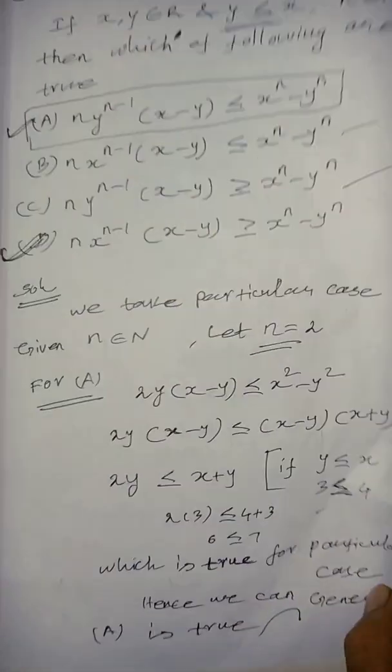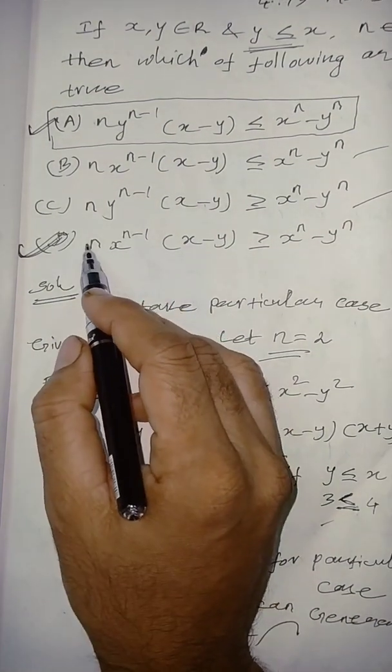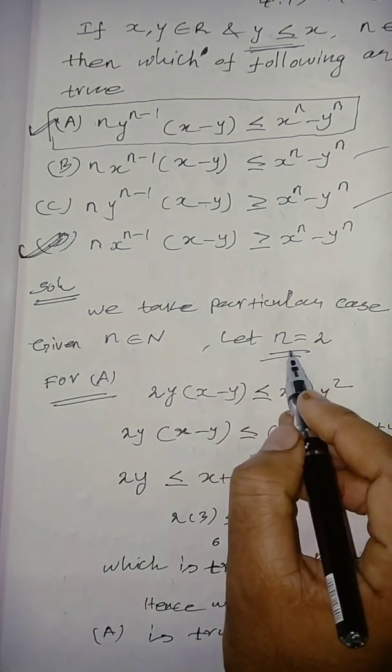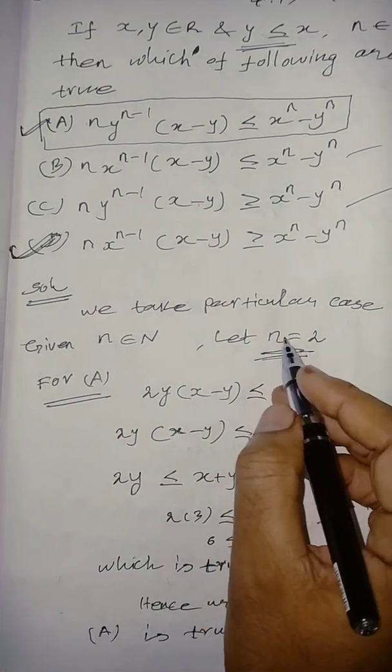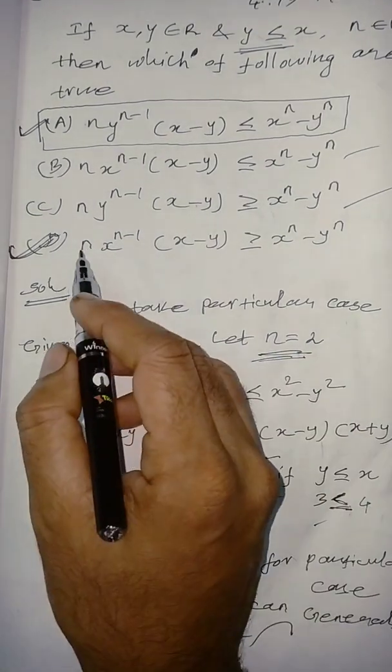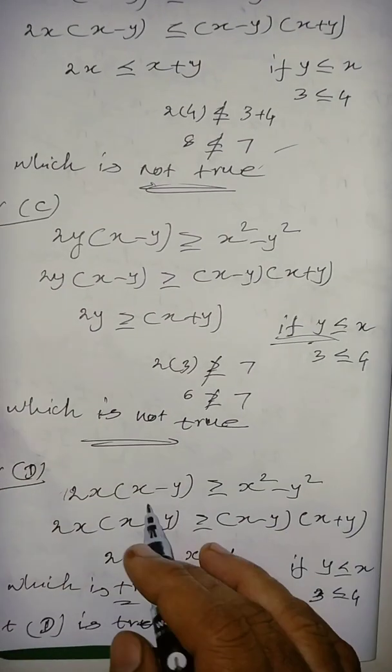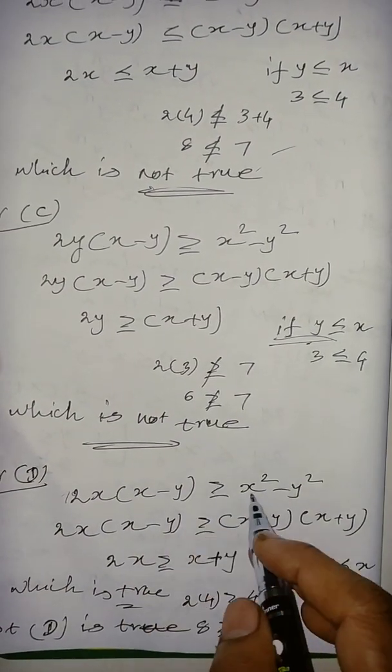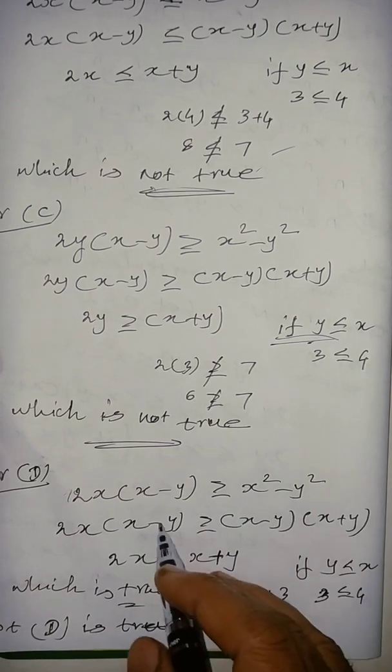So, 2x power, because from beginning itself, we are taking n value 2, so, 2x power, 2 minus 1, then x minus y, which is greater than or equal to x square minus y square, then, same.